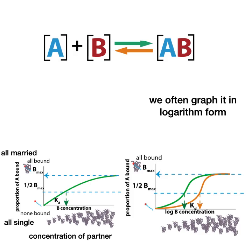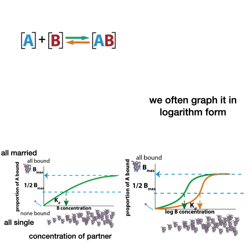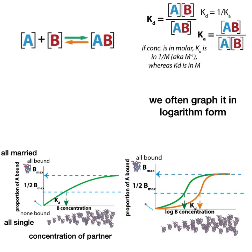For the orange, where you have a higher KD, that's a lower affinity. So it means you need more B. You kind of need to flood A with B in order for half of A to be bound.